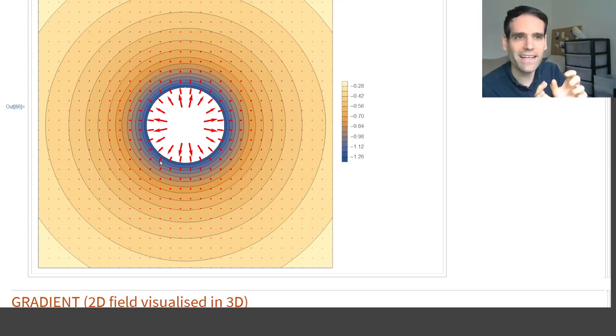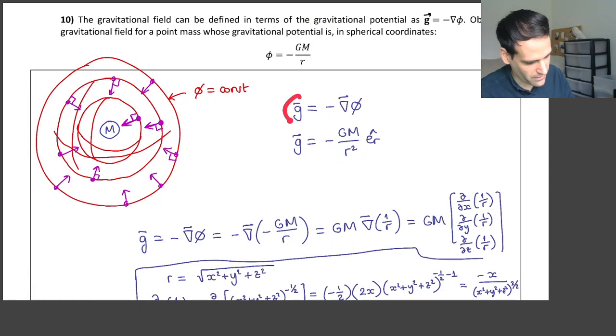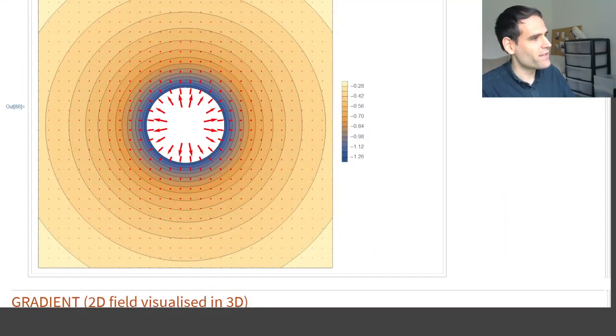When you add the minus sign—remember that the gravitational field is the minus gradient of the potential—you get the gravitational field pointing towards the mass.